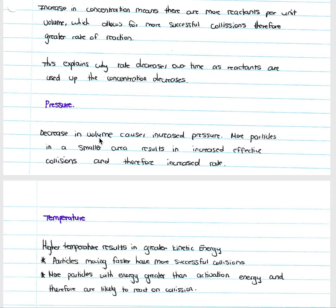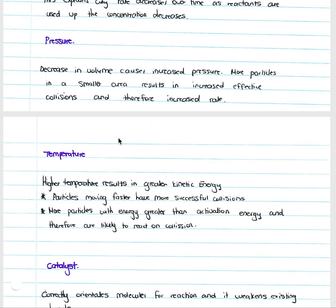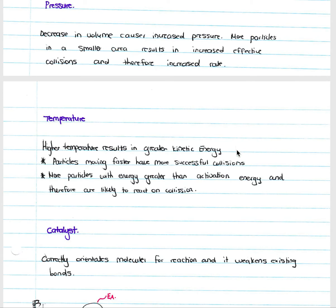Decreasing volume causes increased pressure, resulting in more particles in a smaller area, more effective collisions, and an increased rate. Increasing volume decreases pressure, reducing effective collisions and lowering the rate. Increasing temperature gives particles greater kinetic energy so they move faster. Although not all collisions are successful, more collisions overall increases the chance of successful ones — more particles exceed the activation energy threshold, leading to an increased reaction rate.